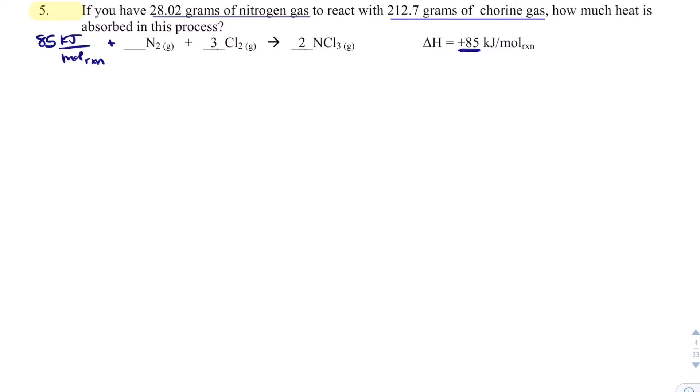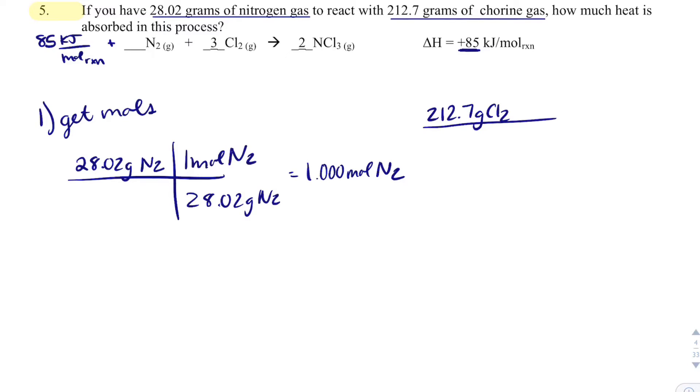The way I do limiting reactants is first get moles. 28.02 grams of nitrogen, and there's actually 28.02 grams of nitrogen in 1 mole of nitrogen, so I'm sitting at 1 mole of nitrogen. For chlorine, there's 212.7 grams of Cl2. The molar mass of Cl2 is 70.90 grams per mole, so I get 3 moles of Cl2.